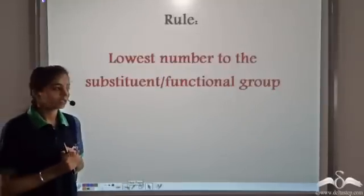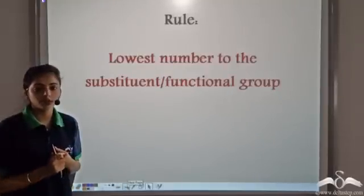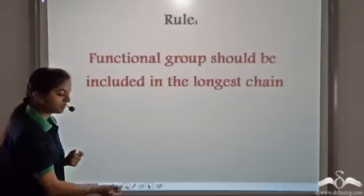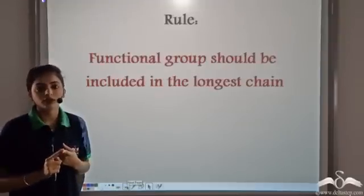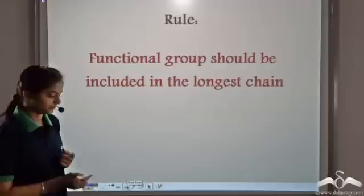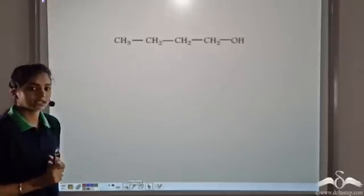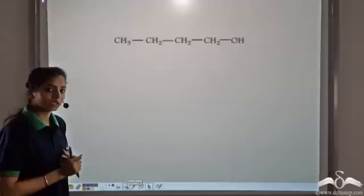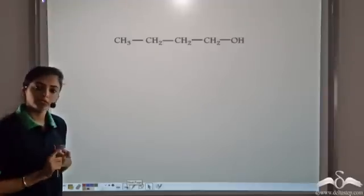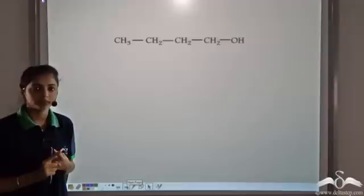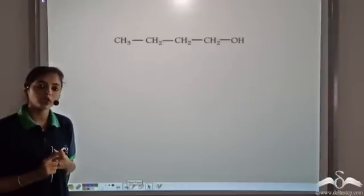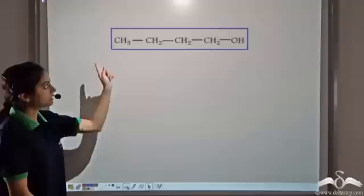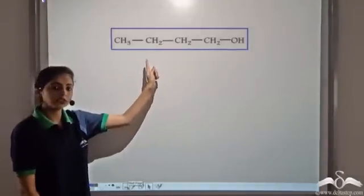The rules remain the same: we give the lowest number to the substituent or the functional group, and the functional group should always be included in the longest carbon chain. Let's take an example. We are given this organic compound. Let's try to find its IUPAC name. The first step remains the same — we have to find the longest carbon chain. In this case, this is the longest carbon chain.